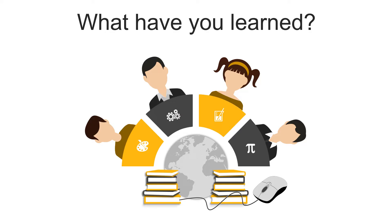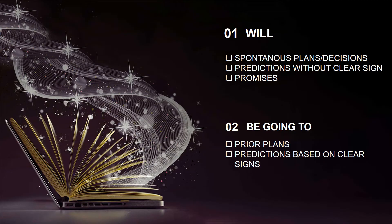Before we talk about 'will' and 'be going to' in passive structures, let's review what you have learned about them. Previously you have learned that 'will' and 'be going to' have slight differences. 'Will' is used for spontaneous plans or decisions, and also for predicting something without clear signs or making promises. We use 'be going to' for prior plans or to predict something with clear signs.